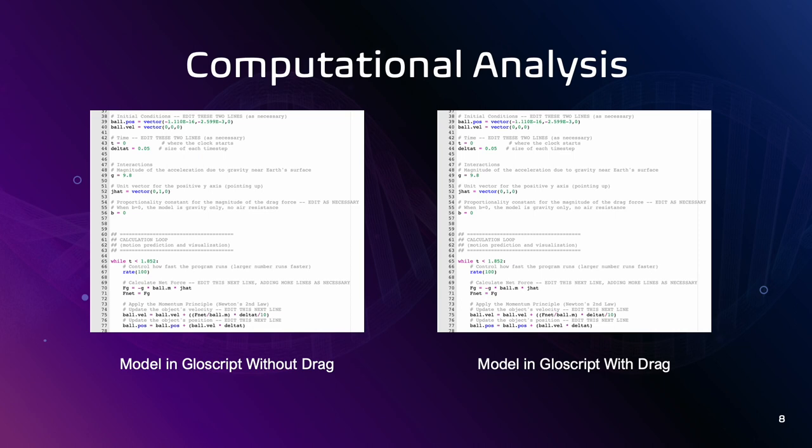For our computational analysis, I wrote down code for two models in GlowScript. One modeled the same motion of a falling object without drag forces, meaning the object was in free fall and only influenced by gravity. And in the second model, I also made sure to include drag forces, which would oppose the motion of the falling object.